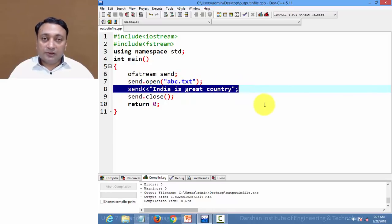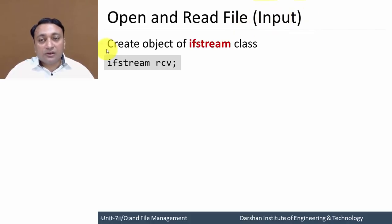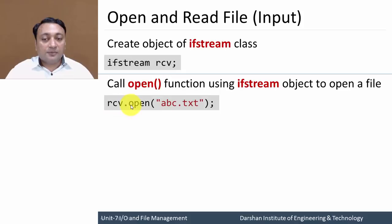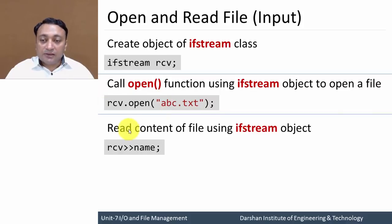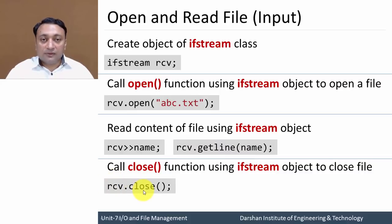In this way you can open a file and write your output to it. Moving forward, let us discuss opening and reading a file. To get input from a file, you are supposed to create an object of ifstream — here we create object 'receive' of type ifstream. Next we open the file using receive.open("abc.txt"). To read the content we write the object name with the extraction operator and store input in a variable 'name'. We can also write receive.getline() to get input into variable 'name'. After reading, we close the file.